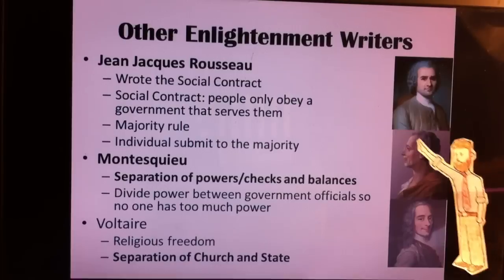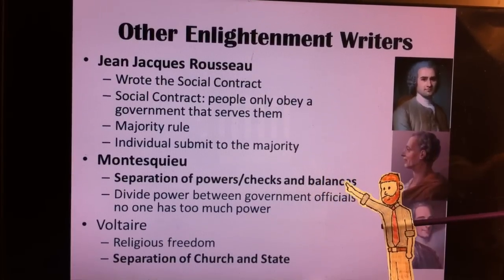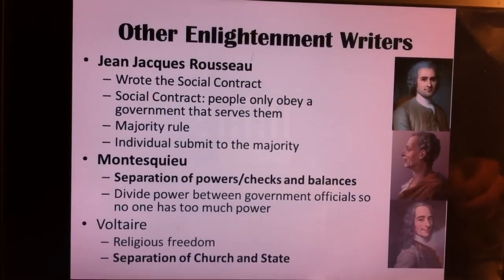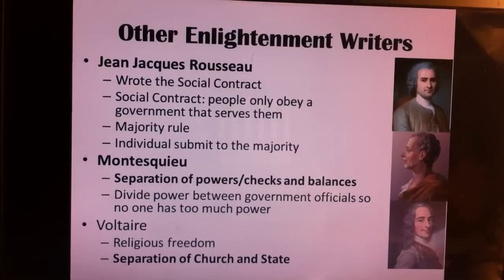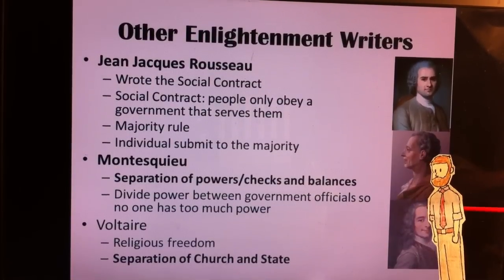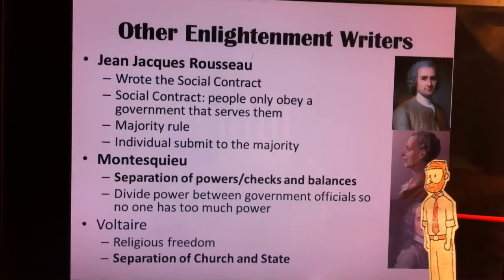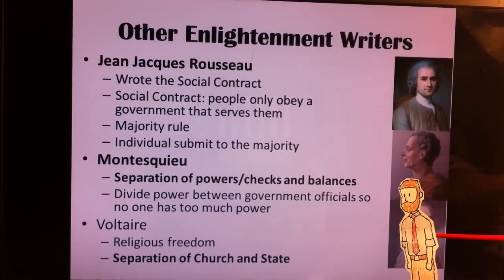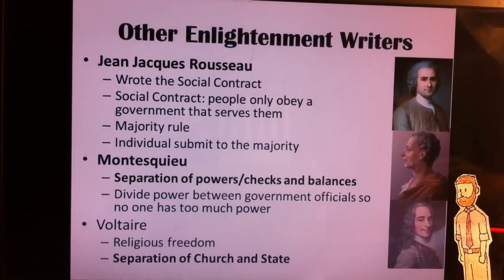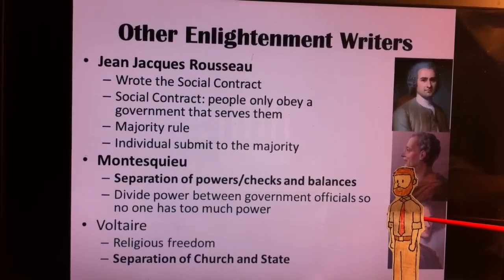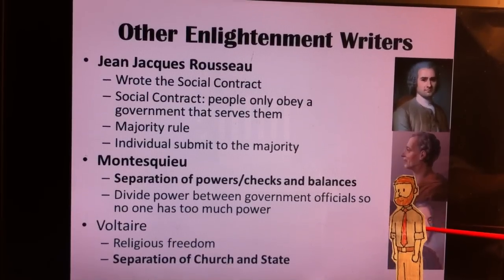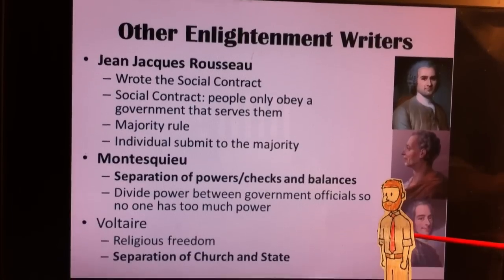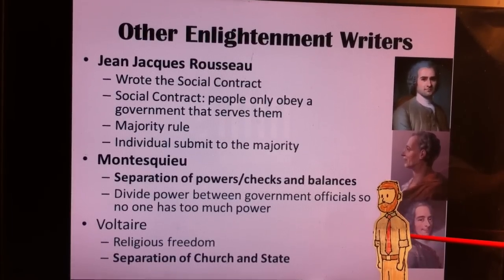Then you have Montesquieu. He believed that an absolute monarch was not good because one person had power and could basically do whatever he wanted. So he came up with the idea of separation of powers, or checks and balances, where you divide the power of government among several officials so that not one of them can have too much power. And then finally you have Voltaire, who believed in religious freedom and that religion should not be part of government — it should be something separate, because there had been so much trouble caused when government and religion mixed.